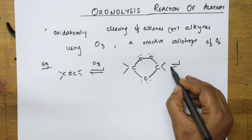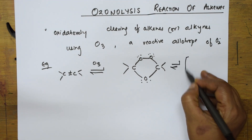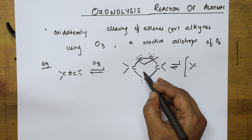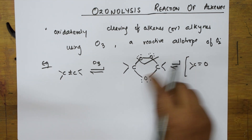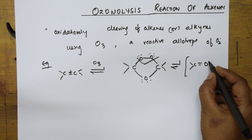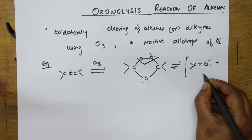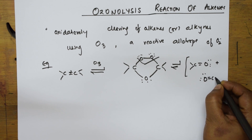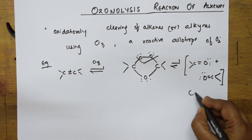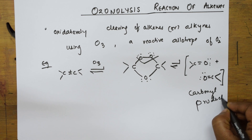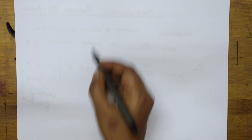This particular intermediate then forms two different products. The first product is C double bond O — there is a cleavage of the bond in this way — forming C=O. These products are called carbonyl compounds, or carbonyl products. Let us now look at the reaction in detail and explain the mechanism of ozonolysis.